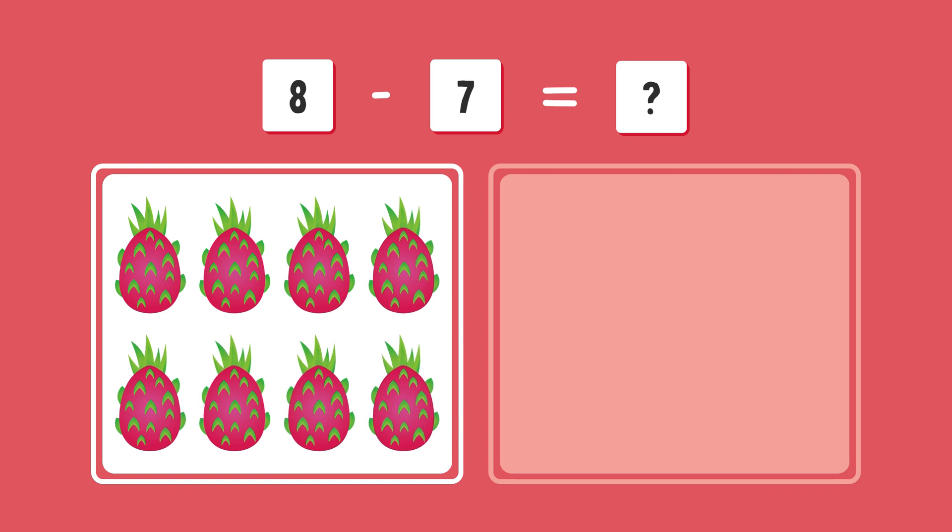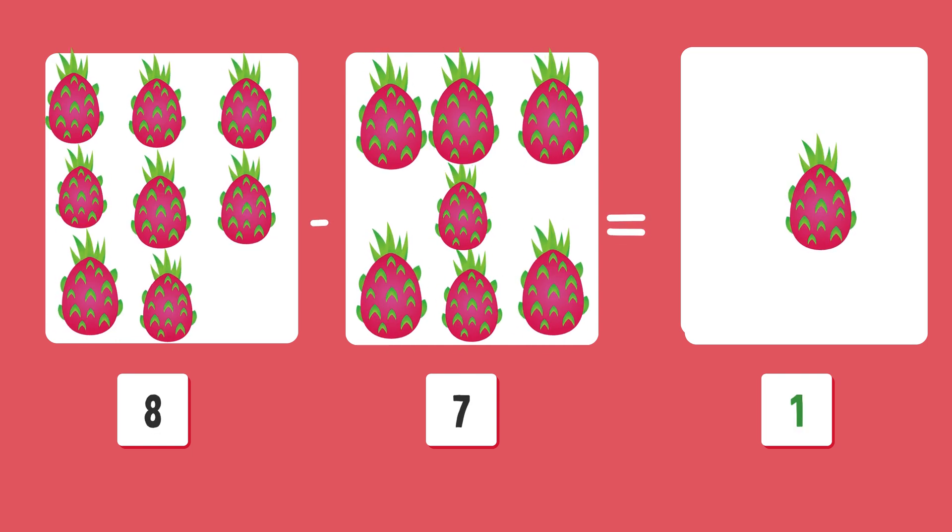What is eight minus seven? You're super smart. Correct answer is one.